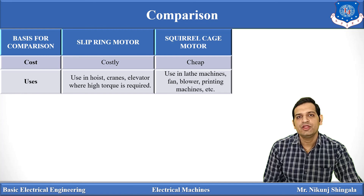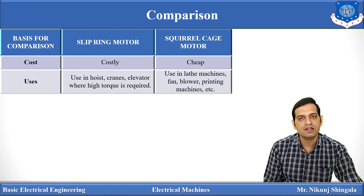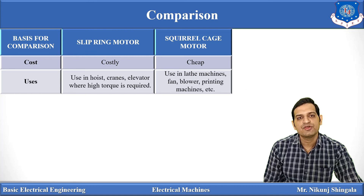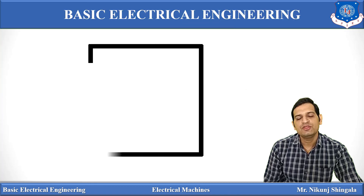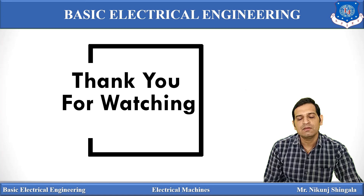So this is all about today's video lecture. In this lecture, I have discussed the introduction about the induction motor and electrical machines, three-phase induction motors, the two types of three-phase induction motor — squirrel cage type and slip ring type — and finally the comparison between slip ring type and squirrel cage type motors. Hope you have enjoyed the video. See you soon in the next video of electrical machines. Thank you for watching.